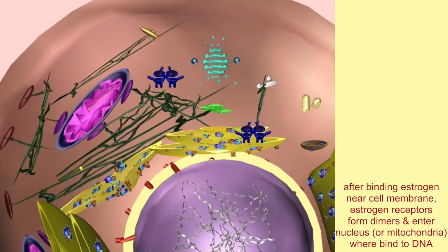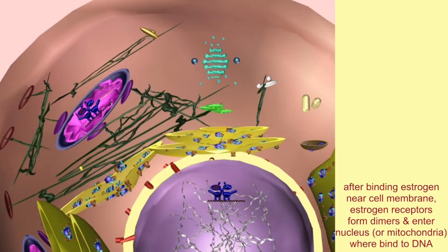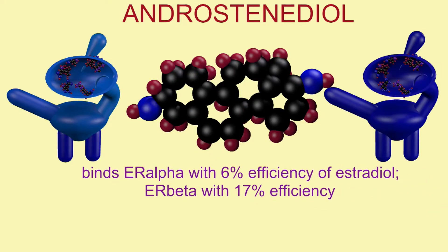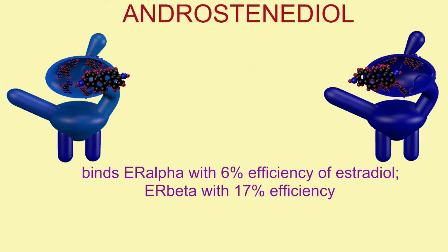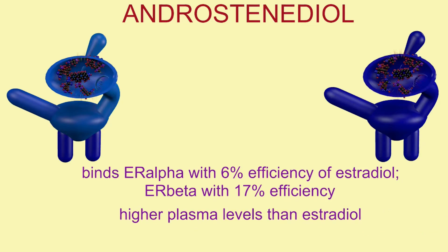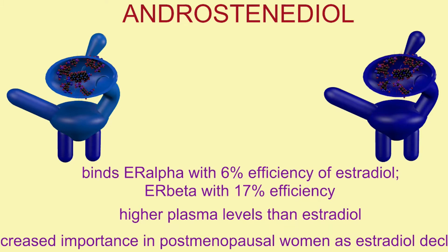Estrogen is a group of hormones which includes androstenediol, which is both a weak estrogen and a weak androgen. Although it does not bind the estrogen receptors as efficiently as estradiol, the levels of androstenediol in blood plasma exceed that of estradiol, making it significant, especially in women as they undergo menopause and levels of estradiol decrease.